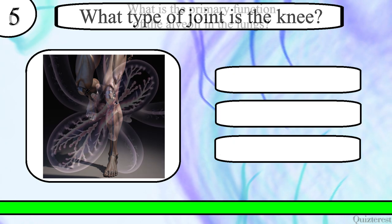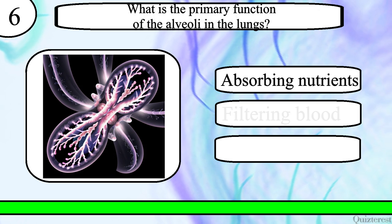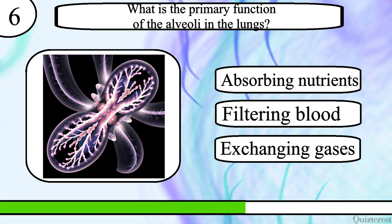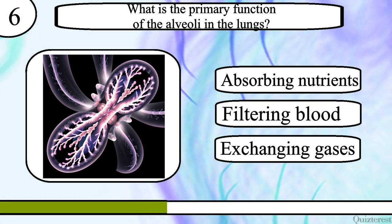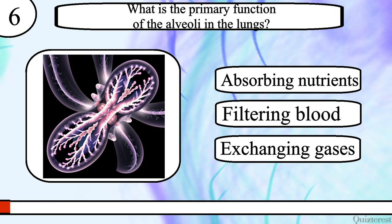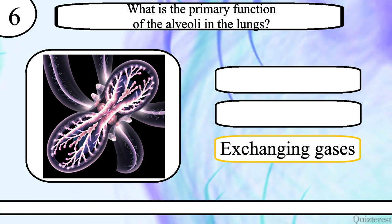Question 6. What is the primary function of the alveoli in the lungs? Absorbing nutrients, filtering blood or exchanging gases? The correct answer is exchanging gases.